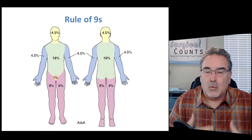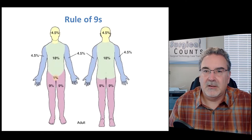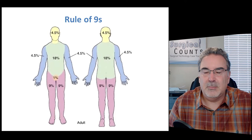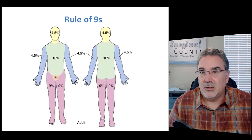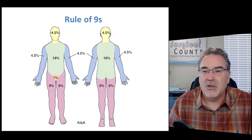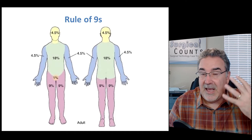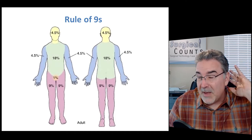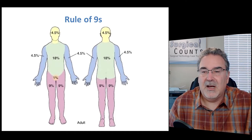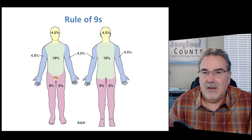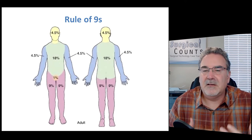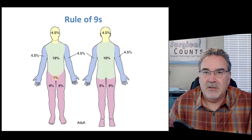The entire torso and abdomen is 18%. The entire back of the body is 18%. Each leg, front and back, would each be 9%. The face and head — front four-and-a-half, back four-and-a-half — total of nine. This is a quick way of estimating the extent of burns a patient received.